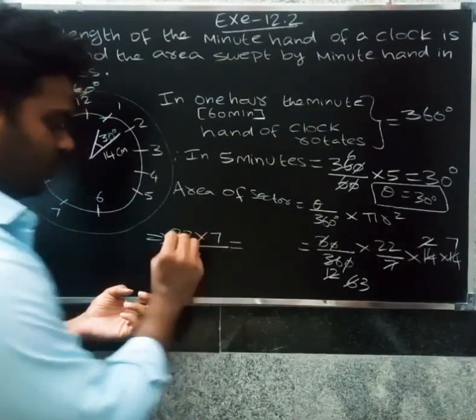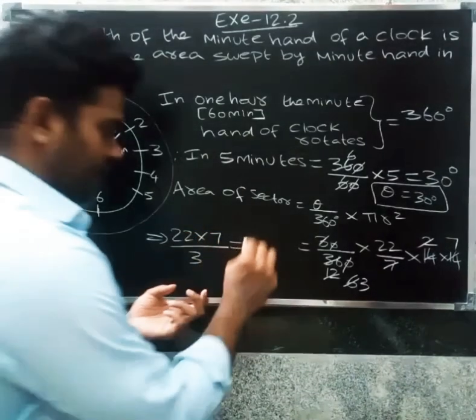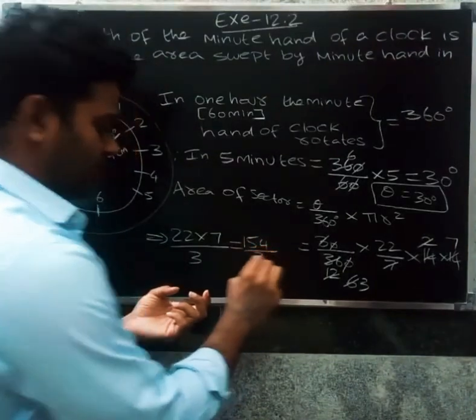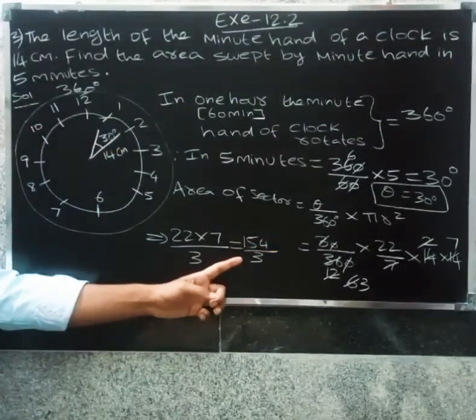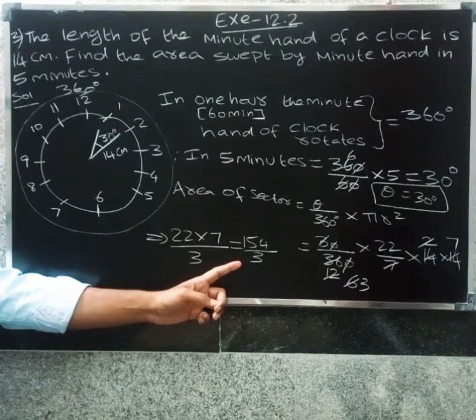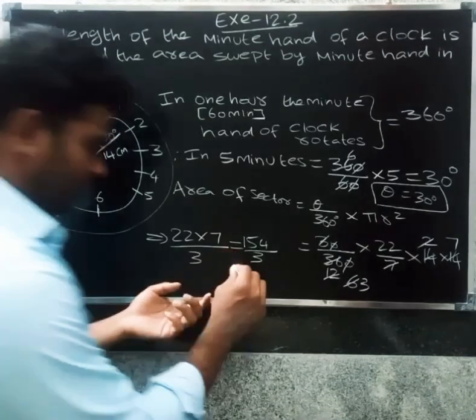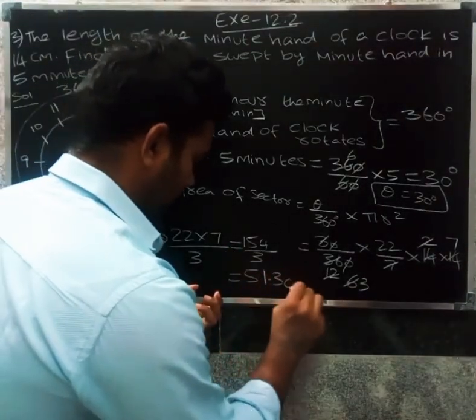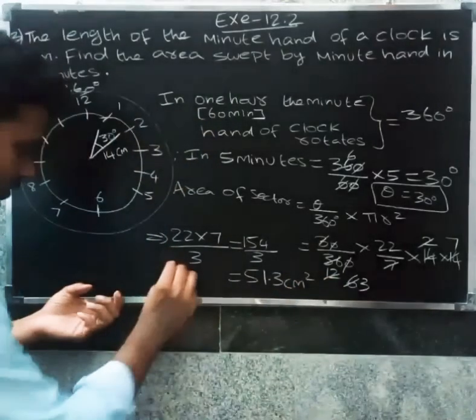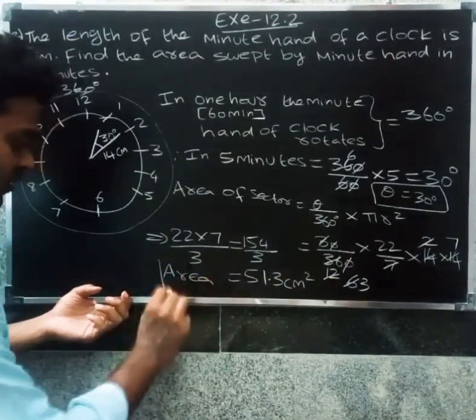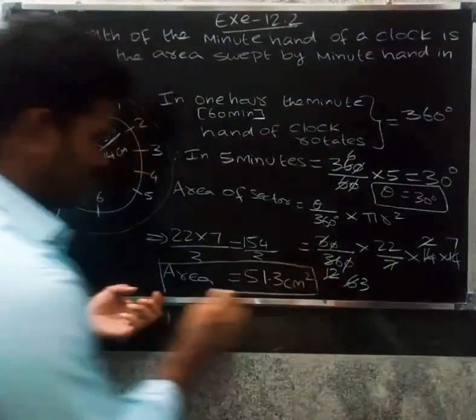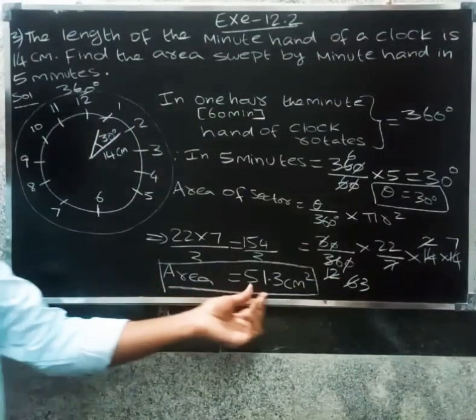Now 154 divided by 3 gives 51.3. So 51.3 centimeters squared. Therefore, area equals 51.3 centimeters squared.